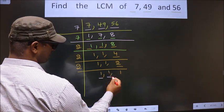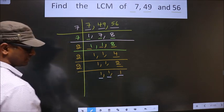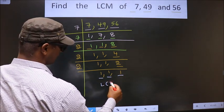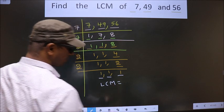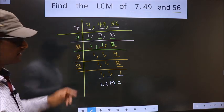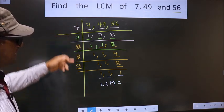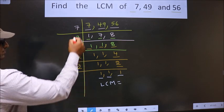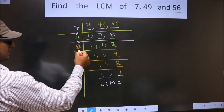So now we got 1 in all the 3 places. So now our LCM is, LCM is the product of these numbers. That is this.